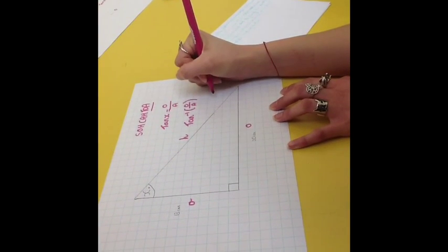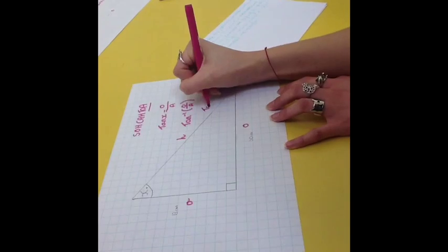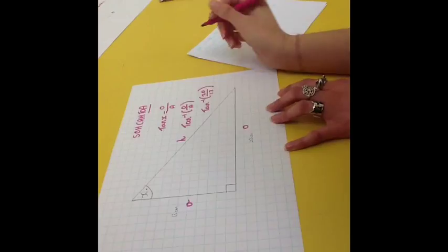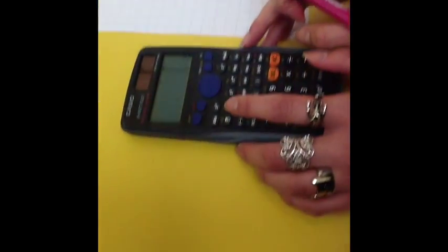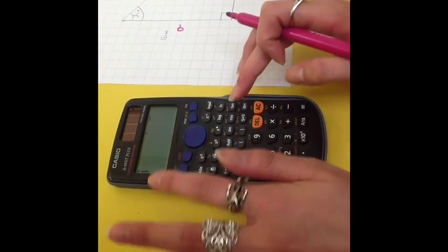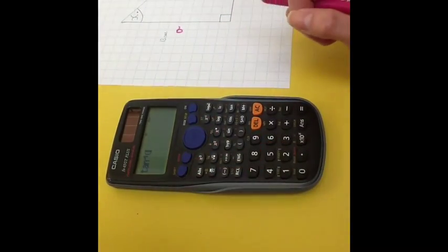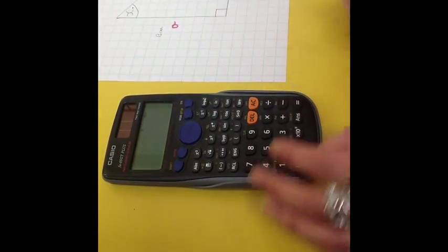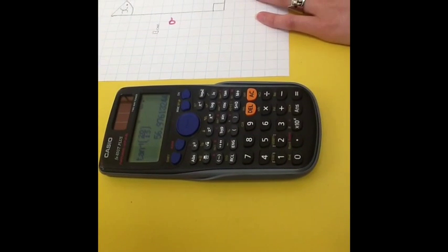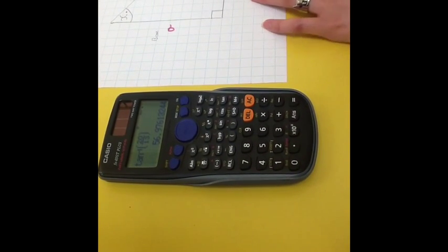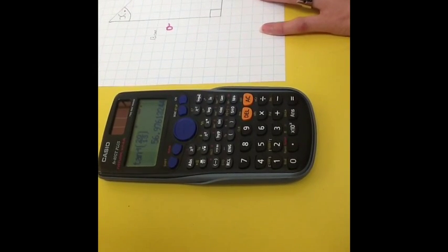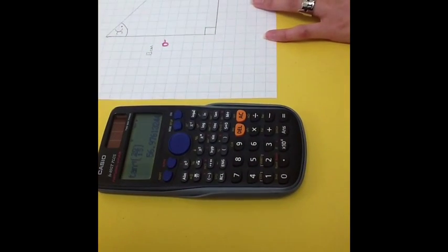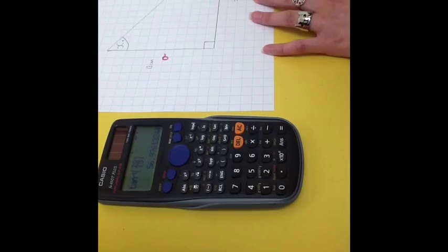So, put the values in. So, you do tan inverse 20 over 13. Put this into your calculator. Now, to do this you click shift tan and it will come up with tan inverse. And then you just put the values in. And you get given 56 point— No, you get given 57. Because you round up to two significant figures.